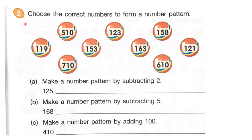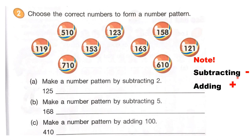The instruction is: choose the correct numbers to form a number pattern. We will make a number pattern here. Letter A says: make a number pattern by subtracting 2. Subtracting 2 means we will minus 2. 125 minus 2 is equal to 123. Letter B: make a number pattern by subtracting 5. Subtracting 5 means minus 5. The answer is 163.